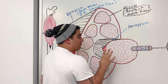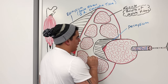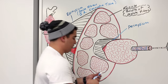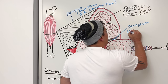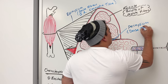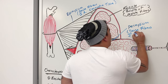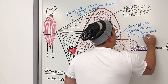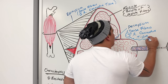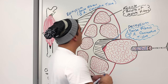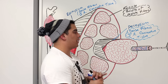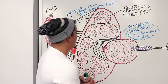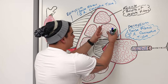The connective tissue surrounding each fascicle is called the perimysium. The perimysium is continuous with the epimysium, and just like the epimysium, it is a dense fibrous irregular connective tissue.